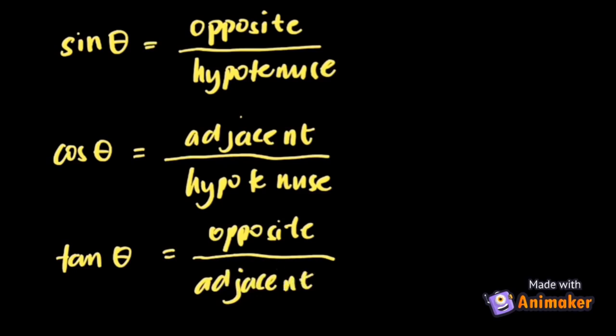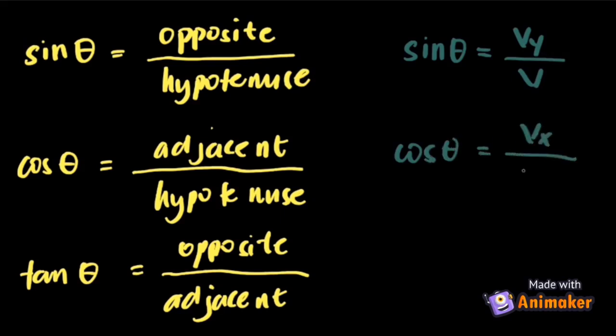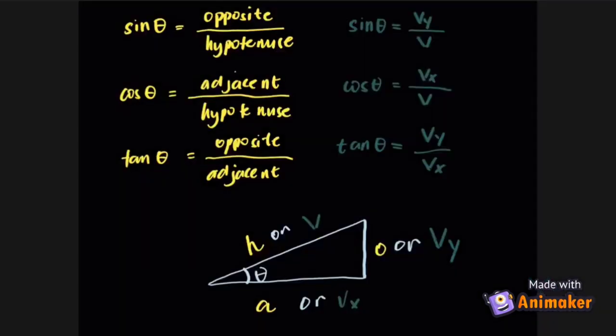And in terms of the vector's component, it is similar with the trigonometric functions, where sin theta is equal to component V_y over hypotenuse. Cosine theta is equal to component V_x over hypotenuse. And tangent theta is equal to component over component. This is the comparison between the two functions.